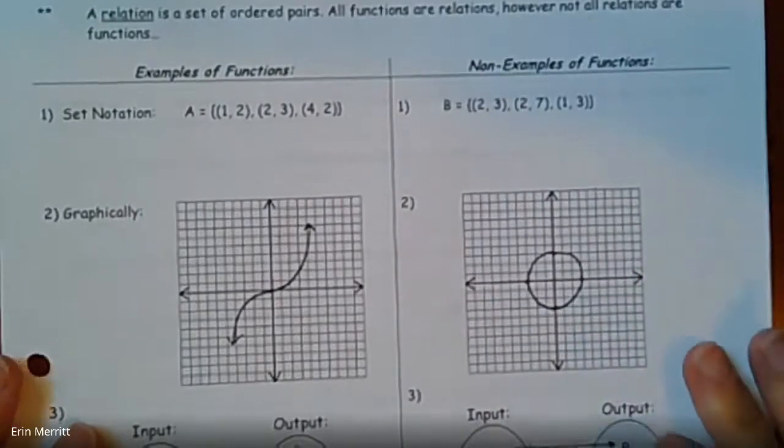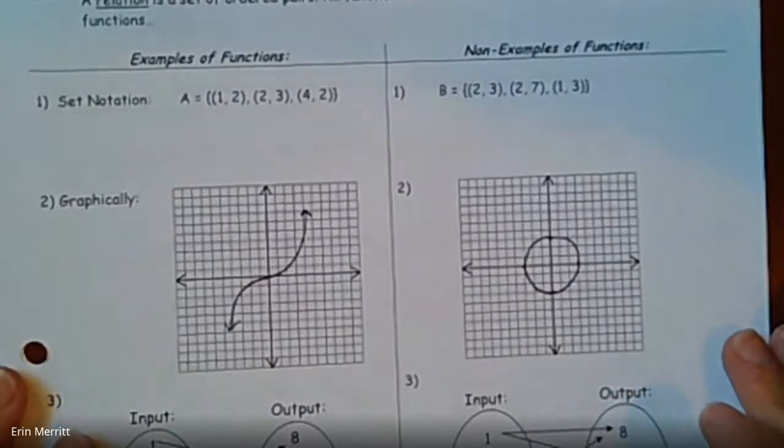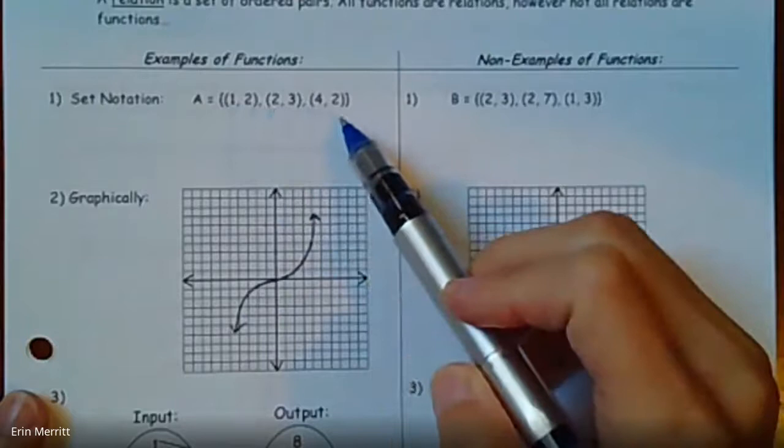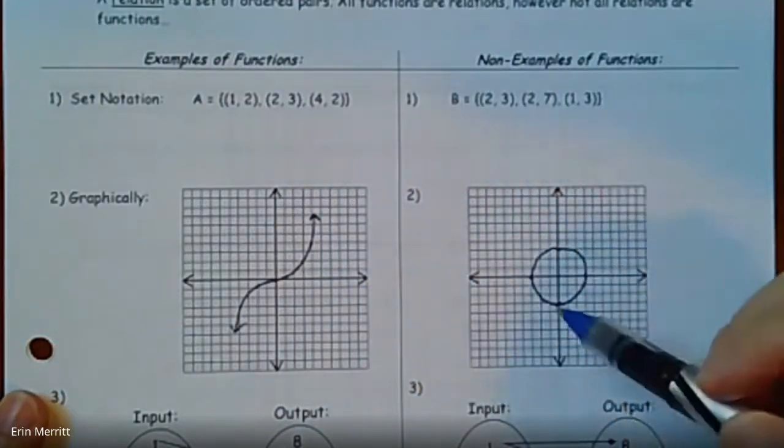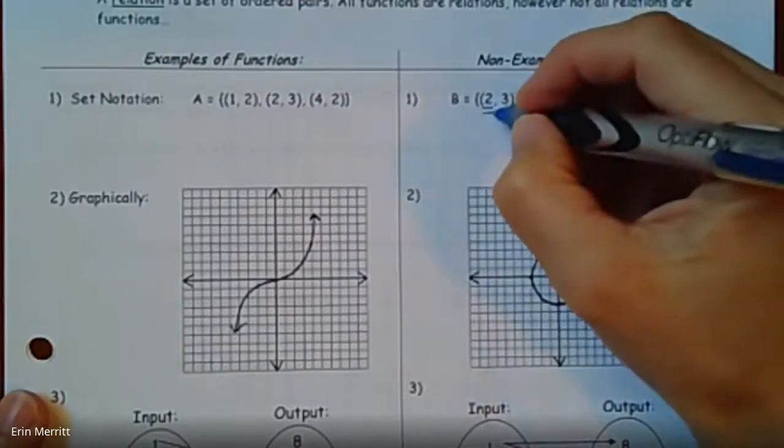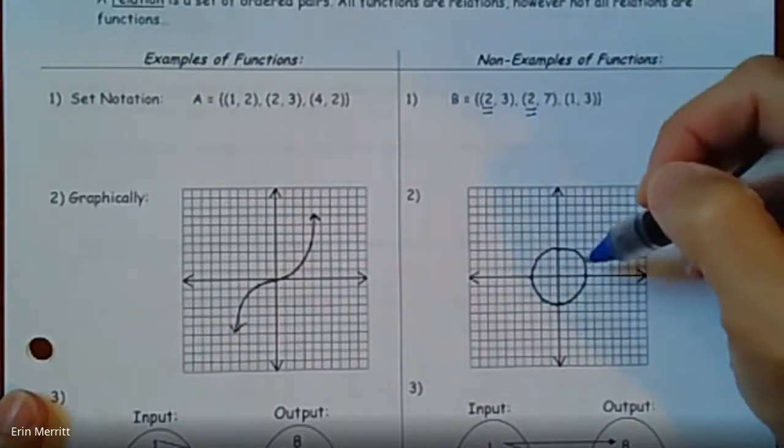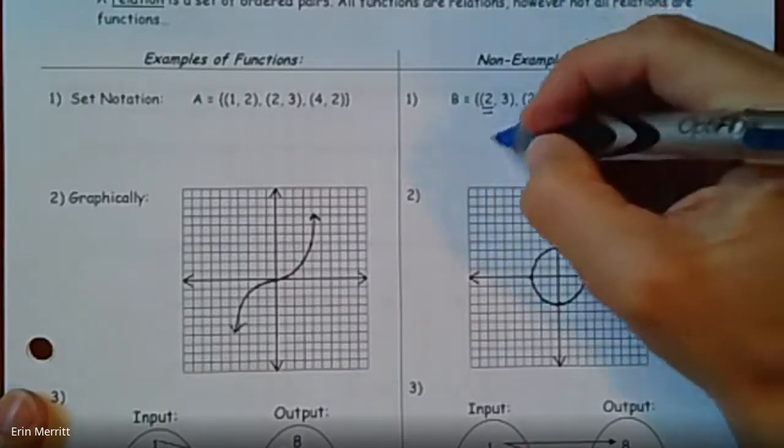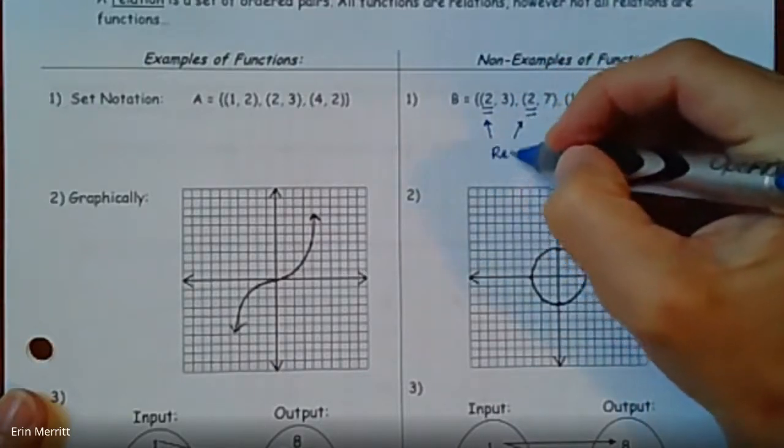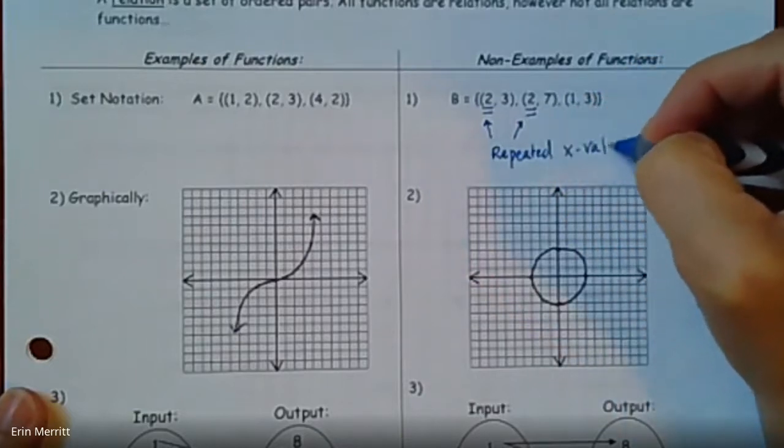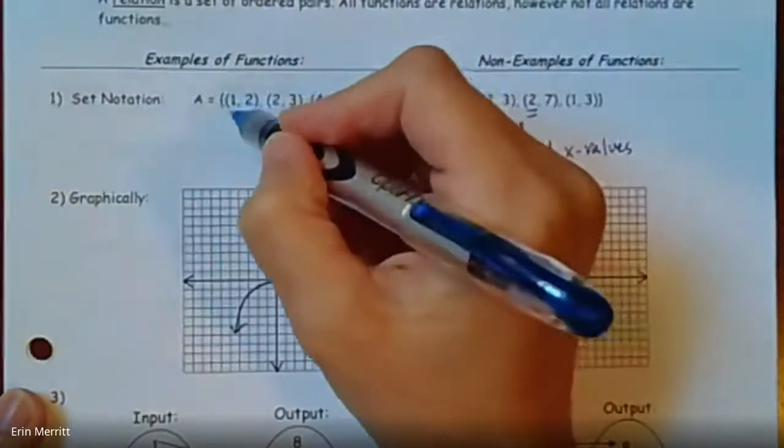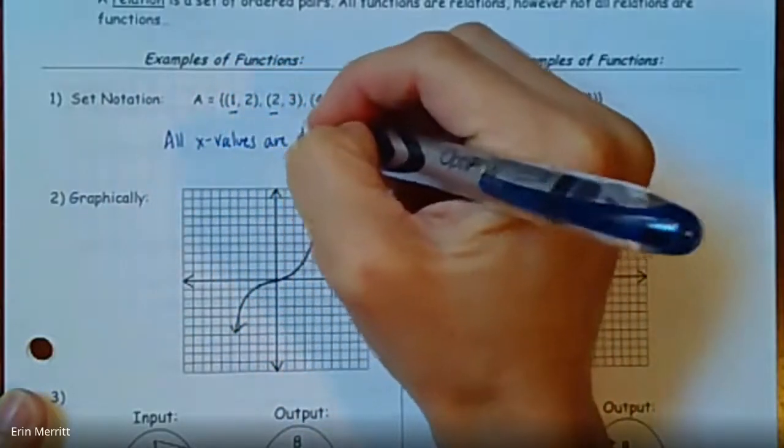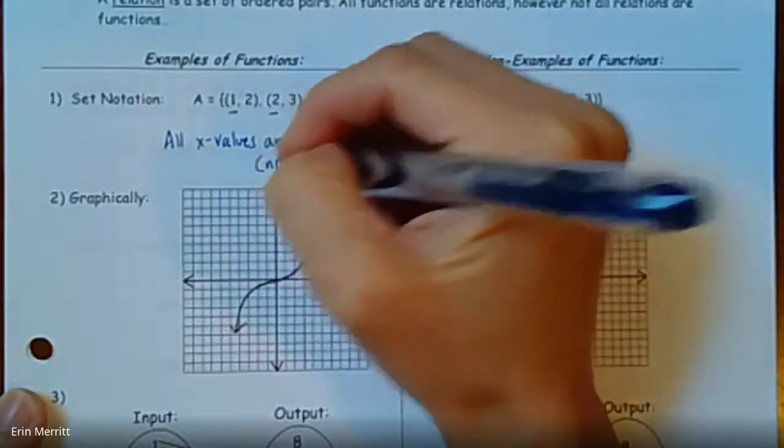Given here, you have three different examples that are functions on the left side, and that are not functions on the right side. The goal is to figure out what's the difference between them. When we look at the set of ordered pairs, we have the point (1,2)(2,3)(4,2). This counts as a function. Whereas over here, you have (2,3)(2,7)(1,3). So hopefully what you're noticing is the fact that over here, you have a repeated x value that goes to two different y's.